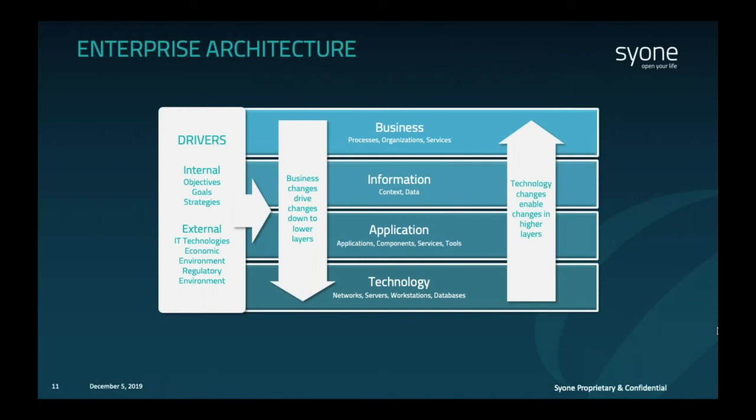As discussed before, changes may occur due to internal or external drivers and they affect the architecture from the business layer downwards, or the opposite way. The idea is really to be able to identify the impact of those changes from any layer to any other layer of the architecture. Enterprise architecture does not define a fixed order for these layers — although they are stacked, a company might start by the top, the bottom, or even the middle. The alignment of change also comes through the agility obtained by managing the architecture at the business level.